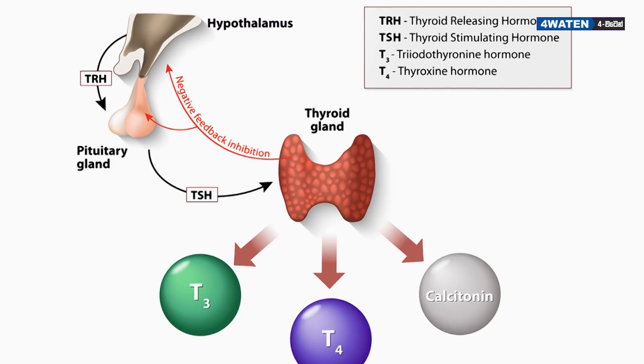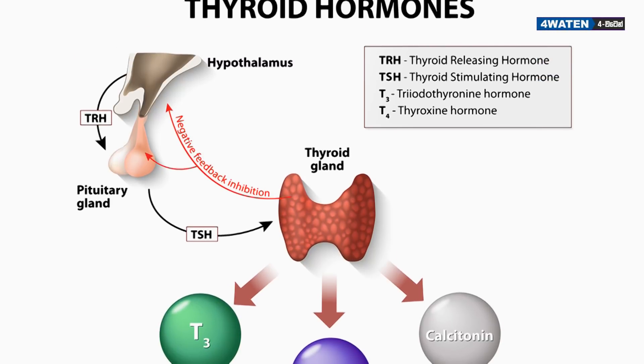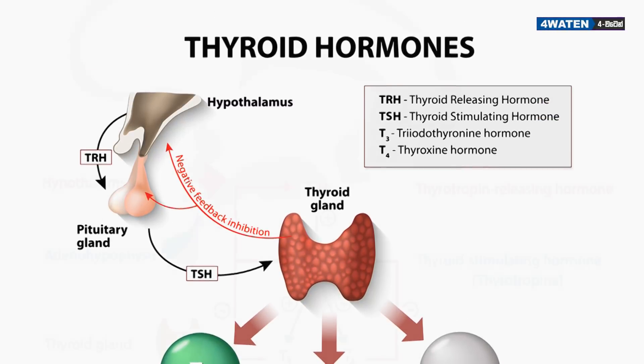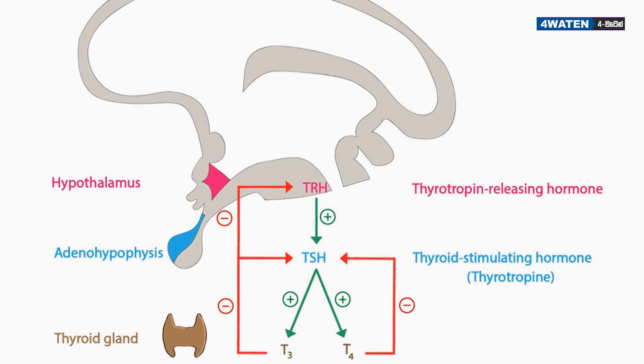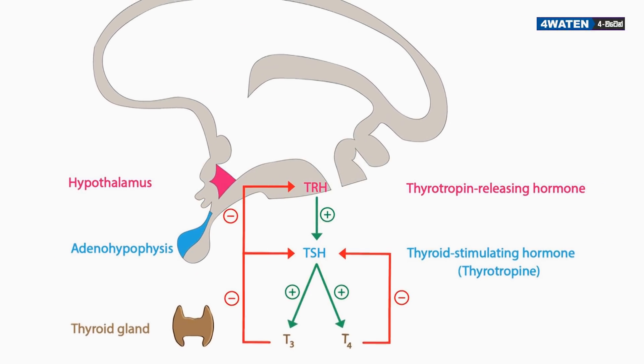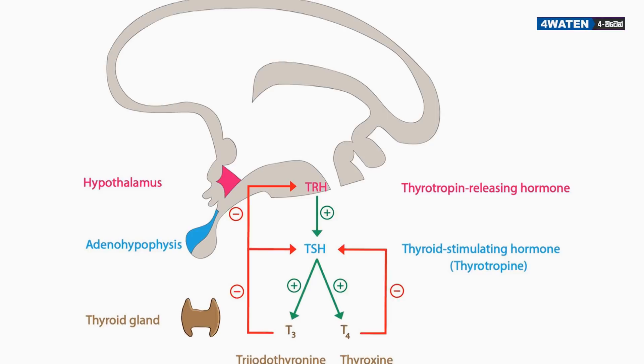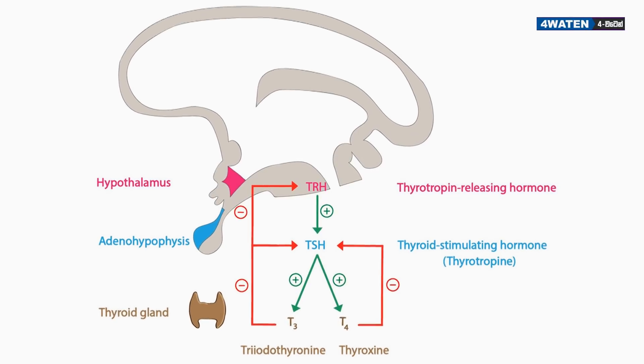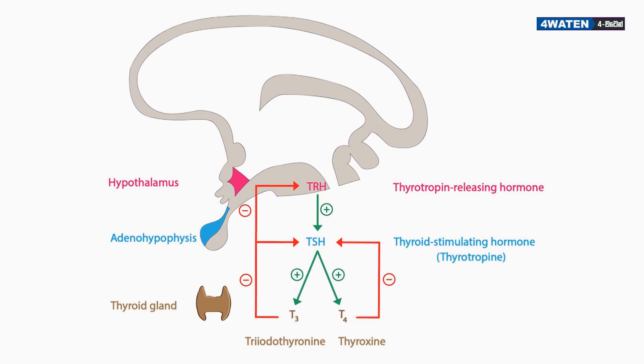Thyroxin is a common hormone. These hormones are called tri-iodothyronine (T3) and tetra-iodothyronine (T4).